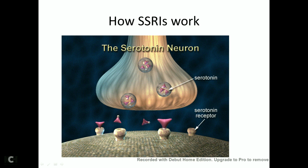Every single tip of each of these dendrite prongs has these receptors on it — these serotonin receptors, and a lot of other receptors too. I'm going to talk about the serotonin receptors because these are the ones most commonly affected by antidepressants.